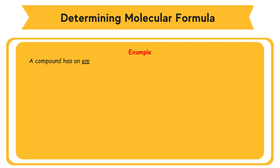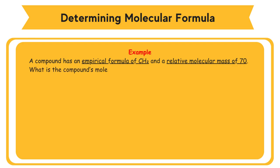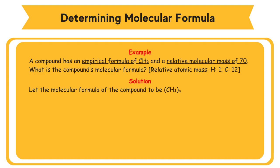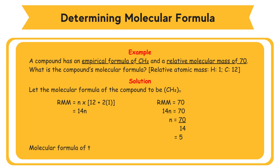Example: A compound has an empirical formula of CH₂ and a relative molecular mass of 70. What is the compound's molecular formula? Relative atomic mass: H = 1, C = 12. Solution: Let the molecular formula of the compound be (CH₂)n. Its relative molecular mass equals n times (12 + 2×1) = 14n. Since relative molecular mass equals 70, 14n = 70, so n = 70 ÷ 14 = 5. Therefore, the molecular formula of the compound is (CH₂)₅, which is C₅H₁₀.